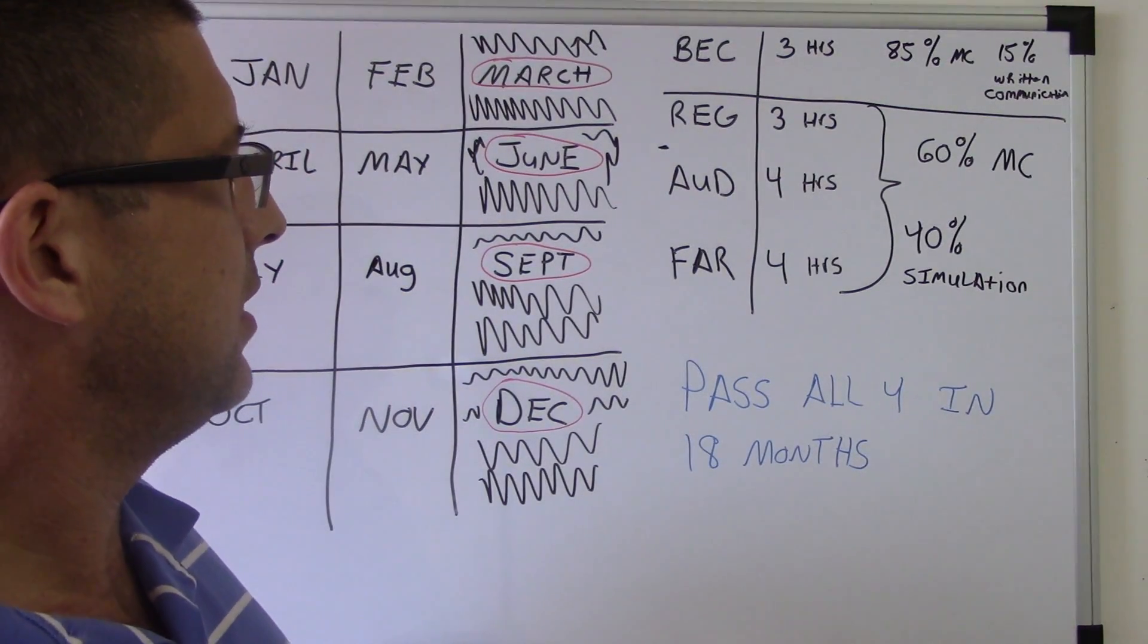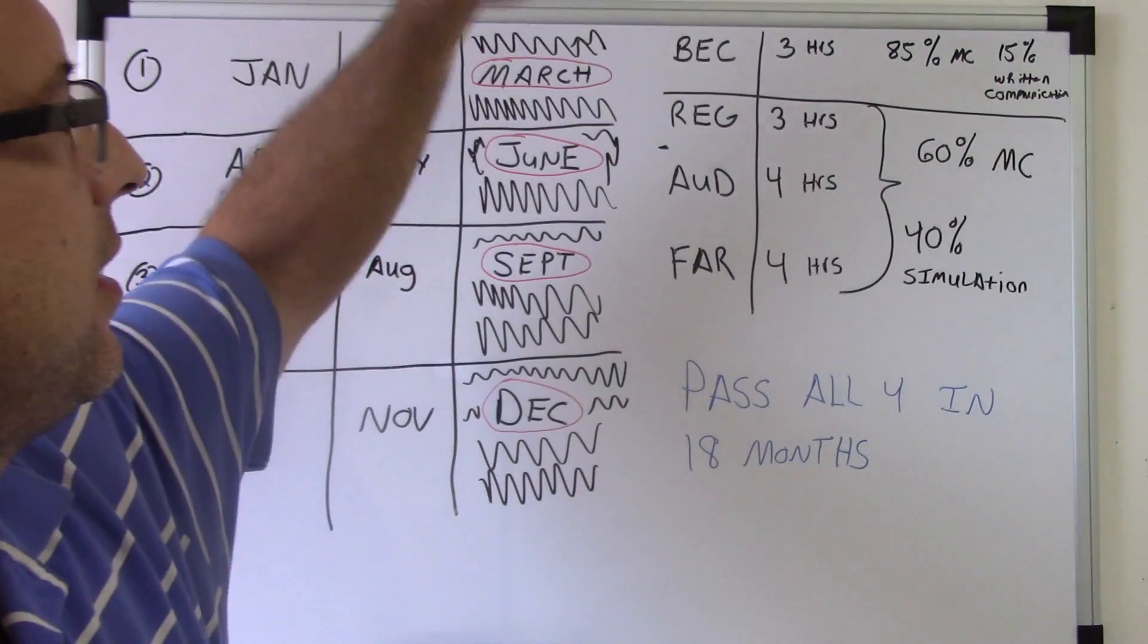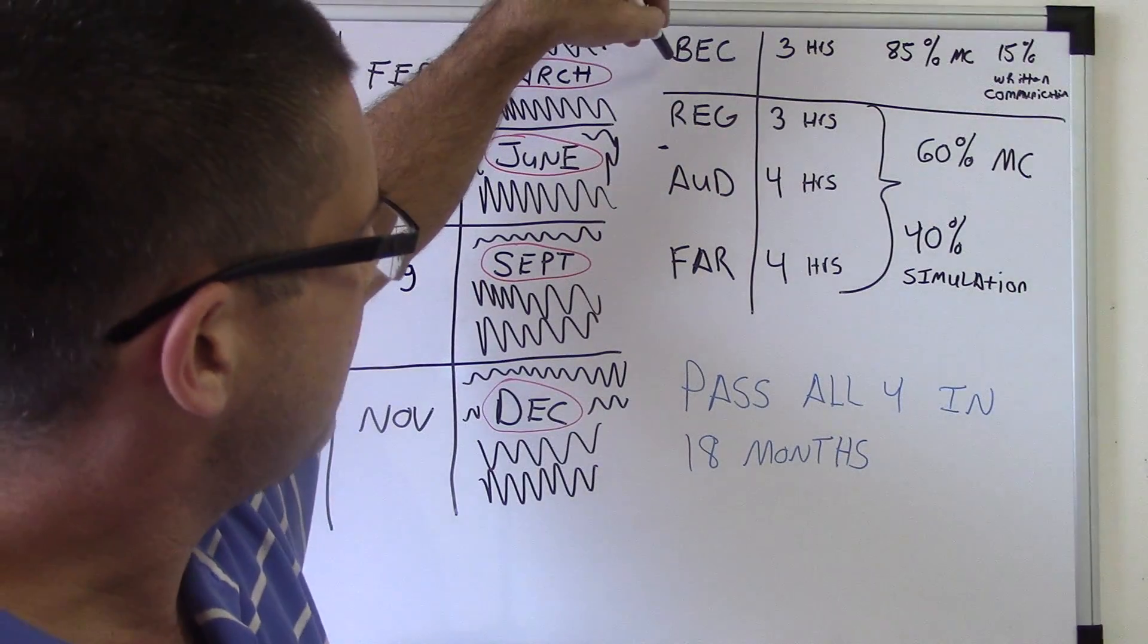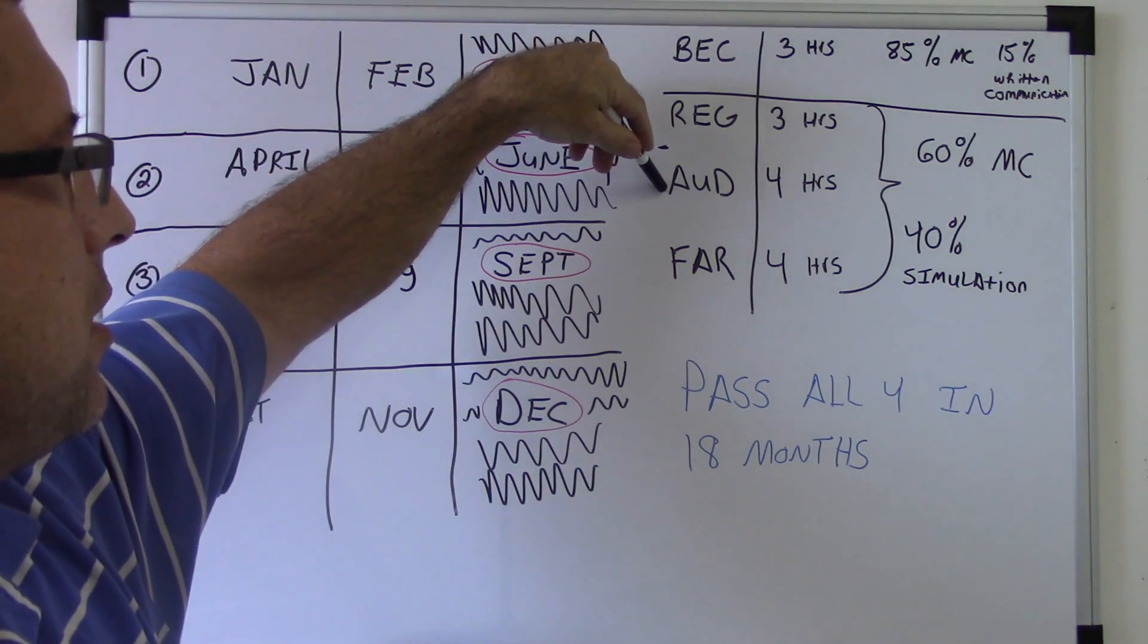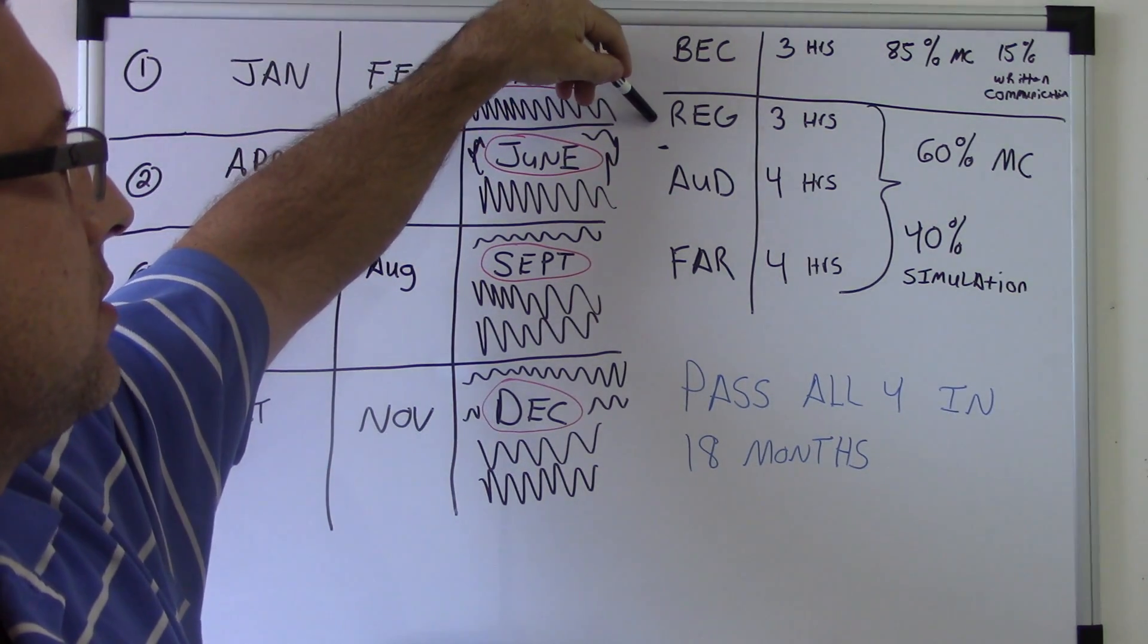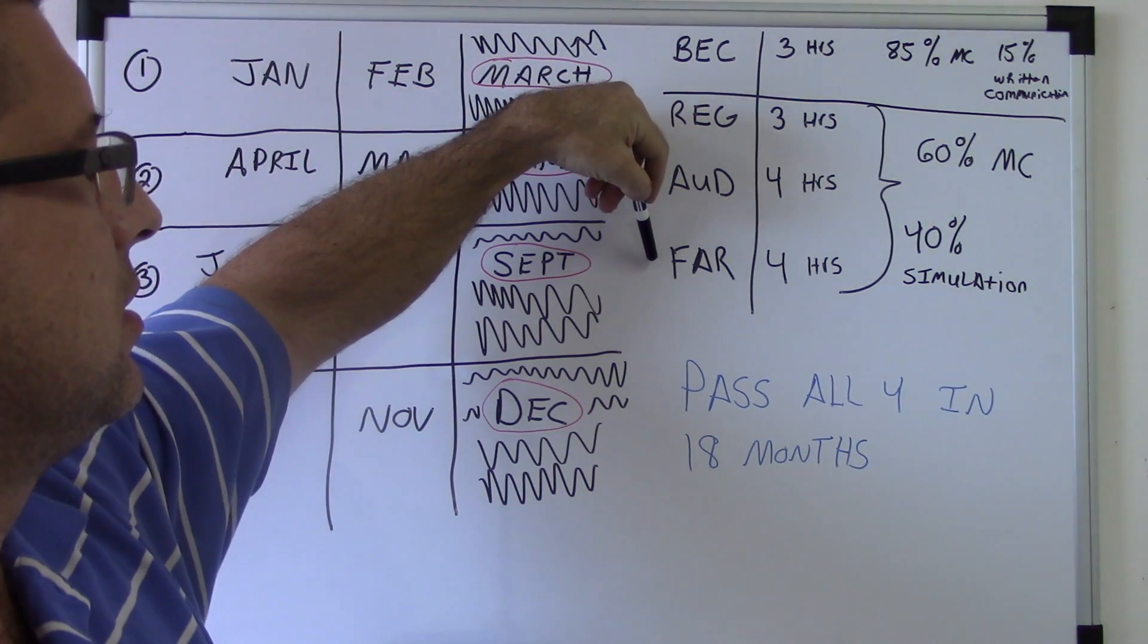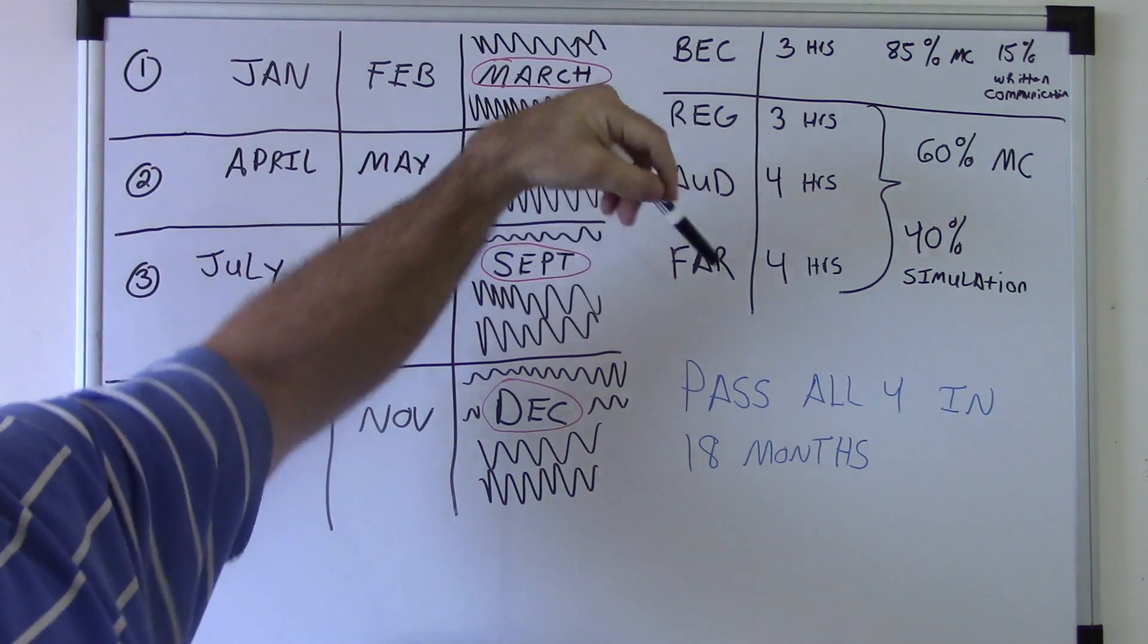Let's see. I thought BEC was easiest, audit was second easiest, REG was third easiest, and FAR was the hardest for me.